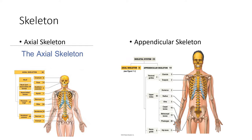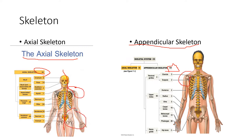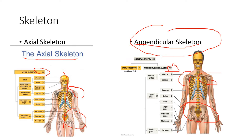The axial skeleton is right down the center axis of the body. The arms and legs are not part of the axial skeleton, obviously. Neither are the girdles — there's a pectoral girdle and a pelvic girdle. Off the pectoral girdles you have the upper extremities, which is part of the appendicular skeleton. We'll talk more about those girdles and extremities later. For right now, let's focus on the axial skeleton.